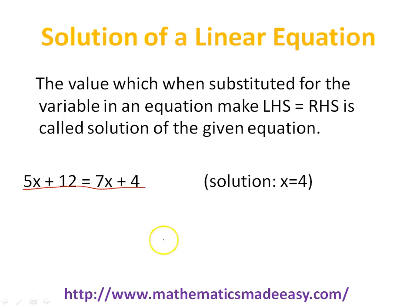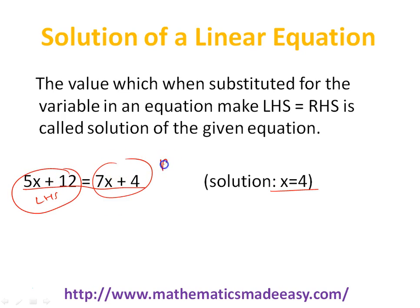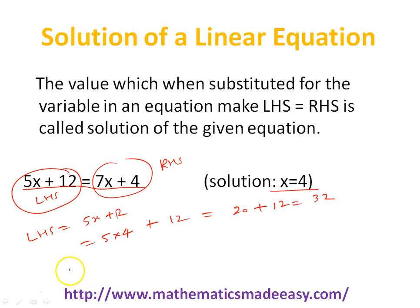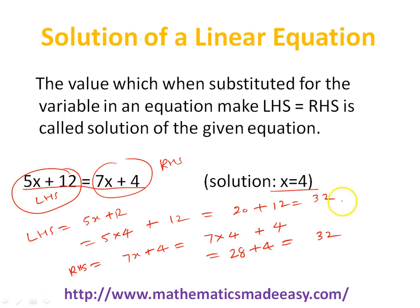Just take an example. Suppose you have the linear equation 5x plus 12 equal to 7x plus 4. If I put x equal to 4 in this equation — this is the left hand side and this is the right hand side. So on the left hand side: 5 times 4 plus 12, that is 20 plus 12 equals 32. On the right hand side: 7 times 4 plus 4, that is 28 plus 4, which is also 32.